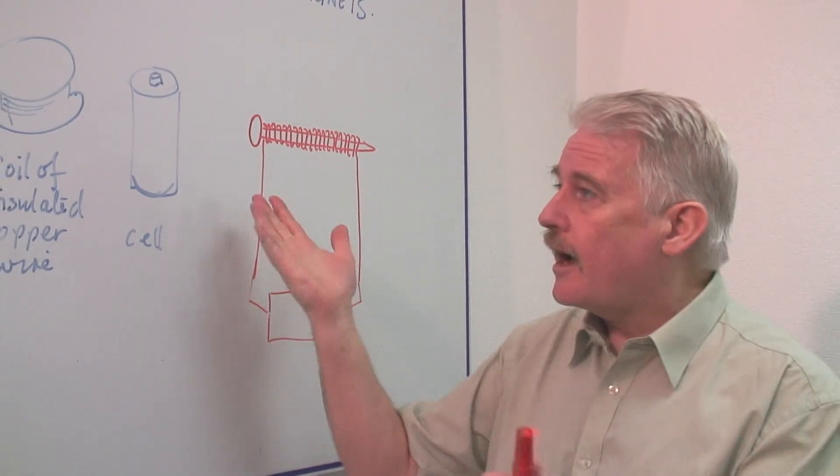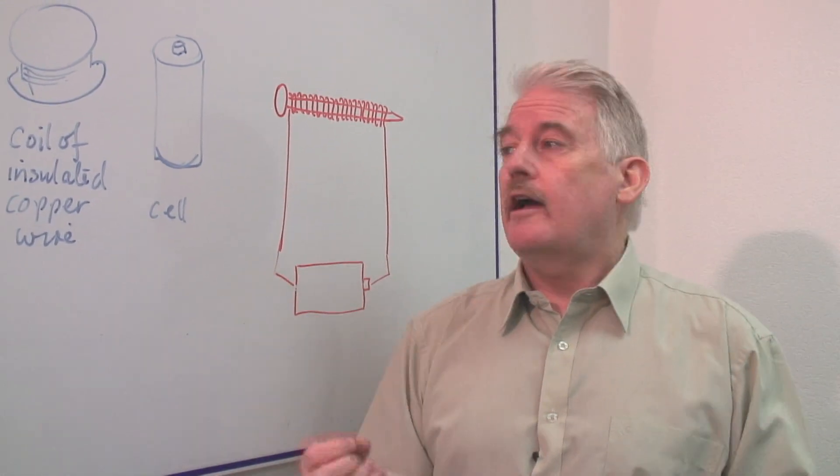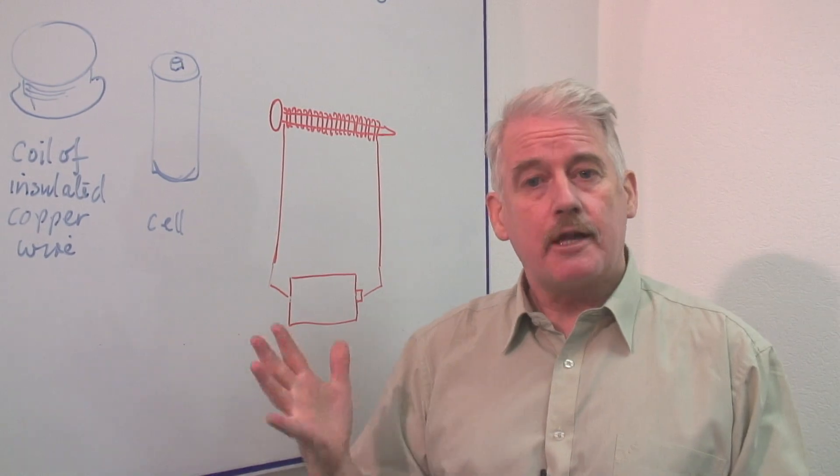So that's basically how to make an electromagnet out of a common or garden nail, and some copper wire, and a battery.